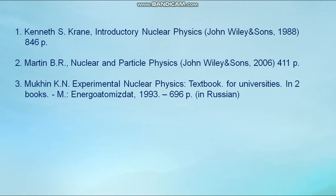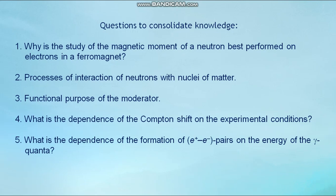Next, the applied application sources. Next, questions to consolidate knowledge. First question: Why is the study of the magnetic moment of neutron best performed on electrons in a ferromagnet? Second: processes of interaction of neutrons with nuclei of matter. Third: functional purpose of the moderator. Fourth: What is the dependence of the Compton shift on the experimental conditions? Fifth question: What is the dependence of the formation of pairs on the energy of gamma quanta? Thank you for your attention.